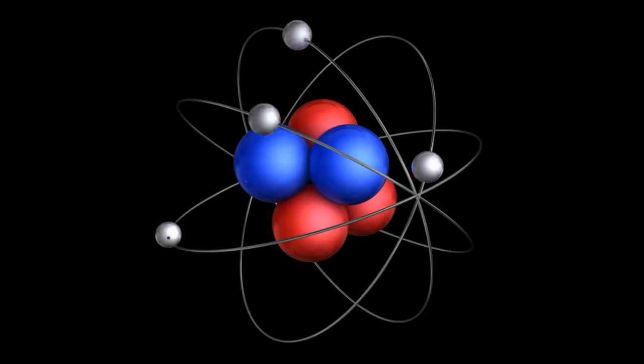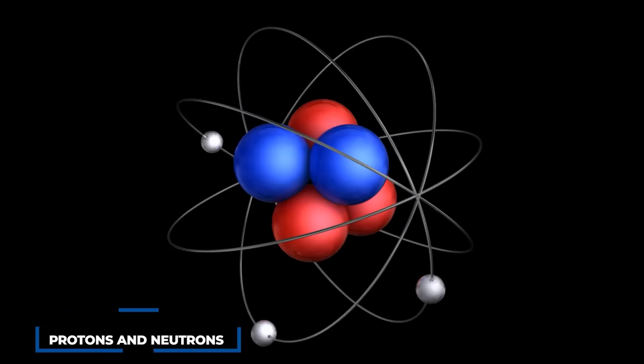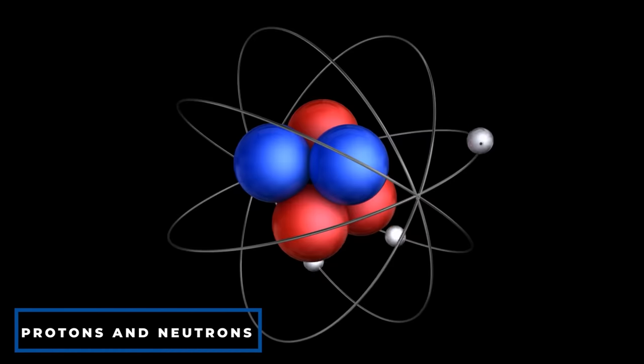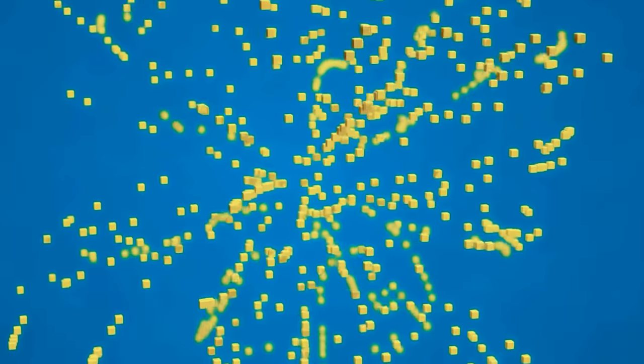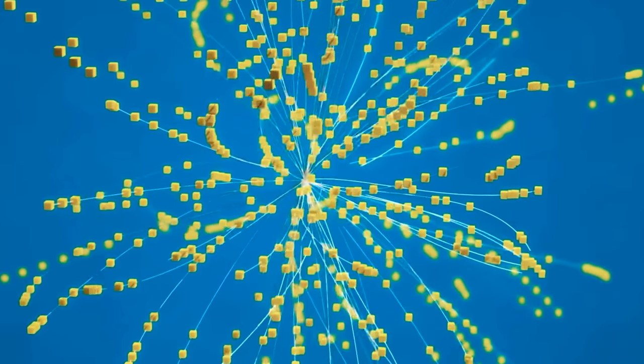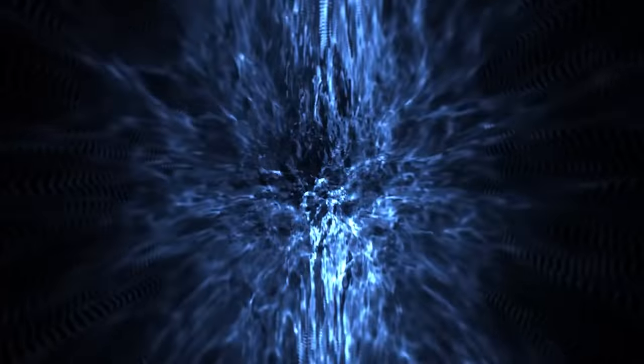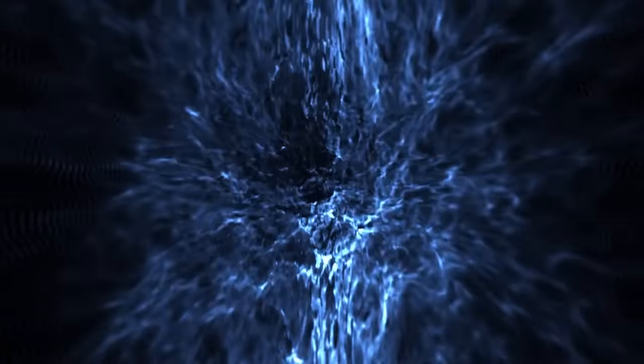These are elementary particles that cool and unite to become the more stable protons and neutrons we know today. A minuscule proportion of the quarks and gluons unite prior to cooling that generate an extremely short-lived X particle.